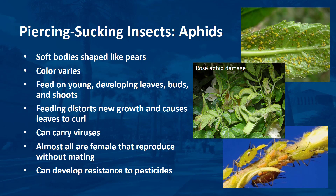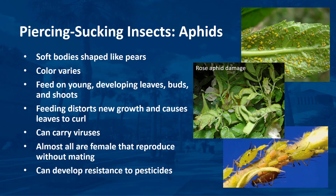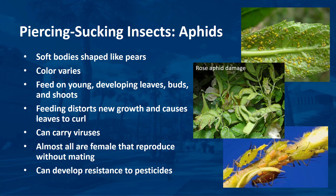Aphids have soft bodies shaped like pears. The color is variable — they can be green, black, brown, red, or yellow. Aphids feed on young, developing leaves, buds, and shoots of many plants. Their feeding distorts new growth and causes leaves to curl. Several types of aphids carry viruses that they vector to plants during feeding. These viruses may be more damaging or lethal to plants than the aphids themselves.